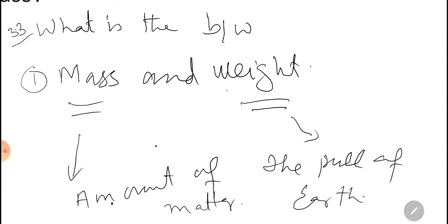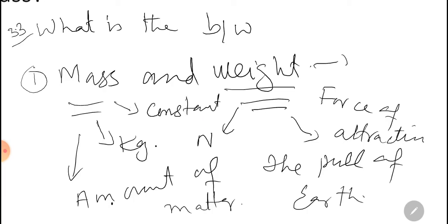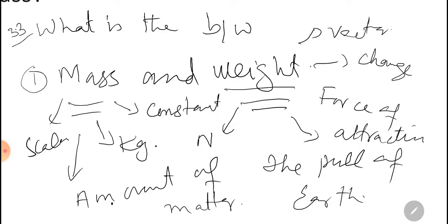Weight is the force with which the earth attracts a body towards its center — the force of attraction of earth. Mass is measured in kilogram; weight is measured in newton. Mass remains constant everywhere; weight changes. Weight is a vector quantity; mass is a scalar quantity. Weight is measured by spring balance; mass is measured by physical balance.